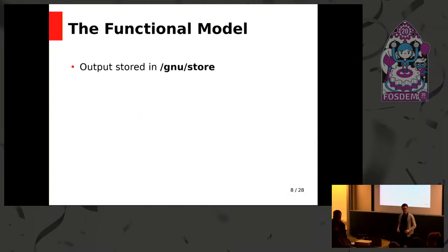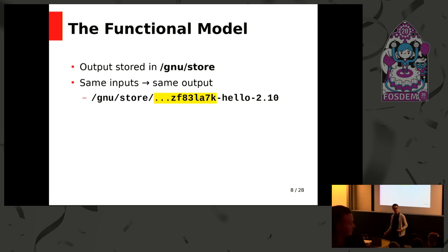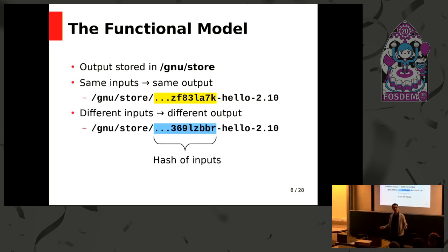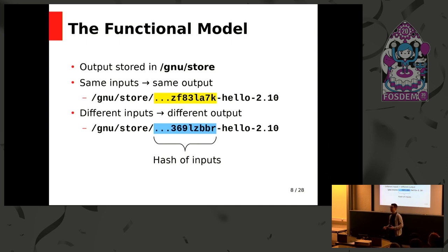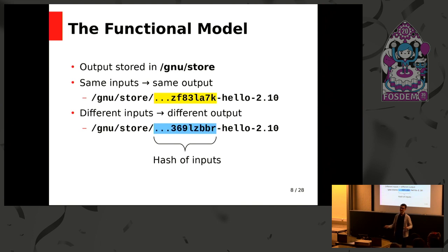The output of this function is not thrown randomly into the file system, as it would be in some other build systems, but we store it in a place called the store, which is at /gnu/store, and we address it by the hash of all of its inputs. So if I build GNU Hello with the same libraries as before, I get the same output path. If I build it with a different set of inputs — like a different version of libc — I get a different output path, and these two versions will not conflict. You also get deduplication of dependencies automatically.